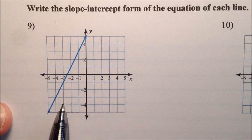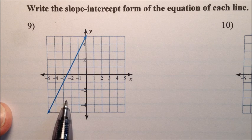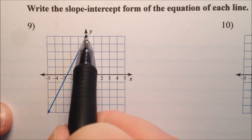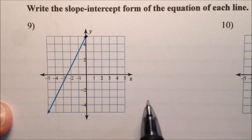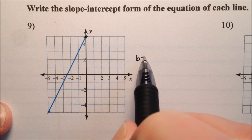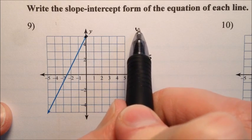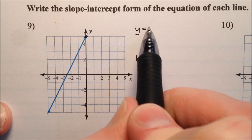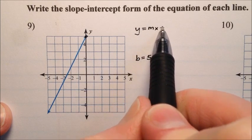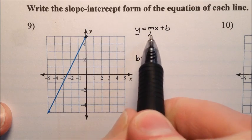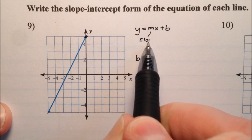On number 9, we have our graph. We need to find the slope and we need to find the y-intercept. The y-intercept is pretty easy to find because it's crossing the y-axis right there at 5. So b equals 5, because the y-intercept is given by the letter b. Recall that slope-intercept form is y = mx + b, where m is the slope and b is the y-intercept.